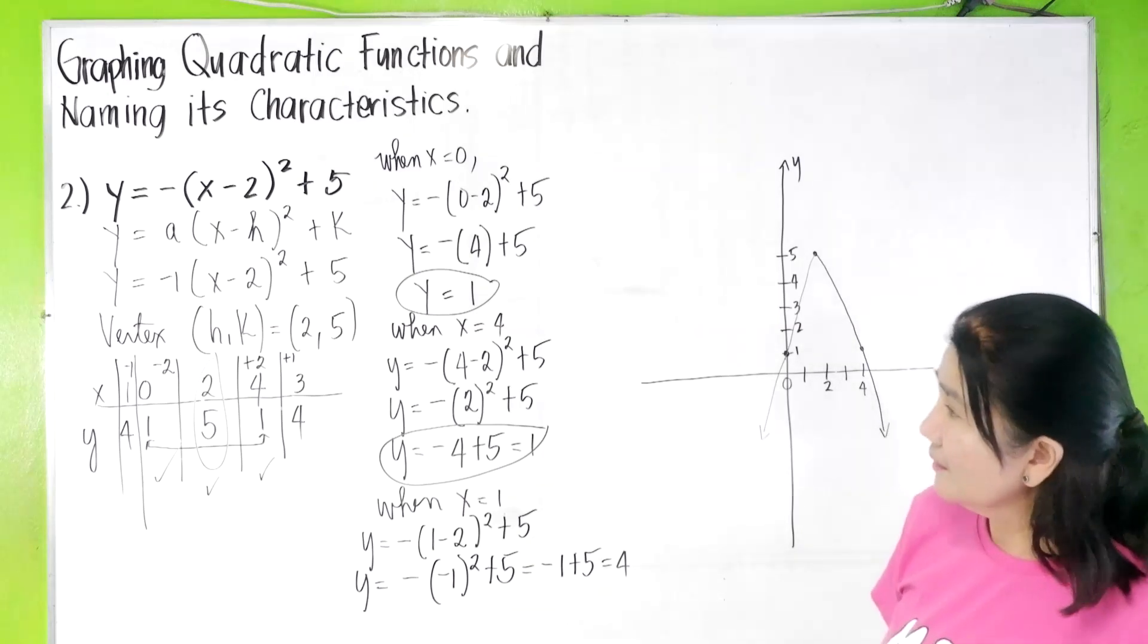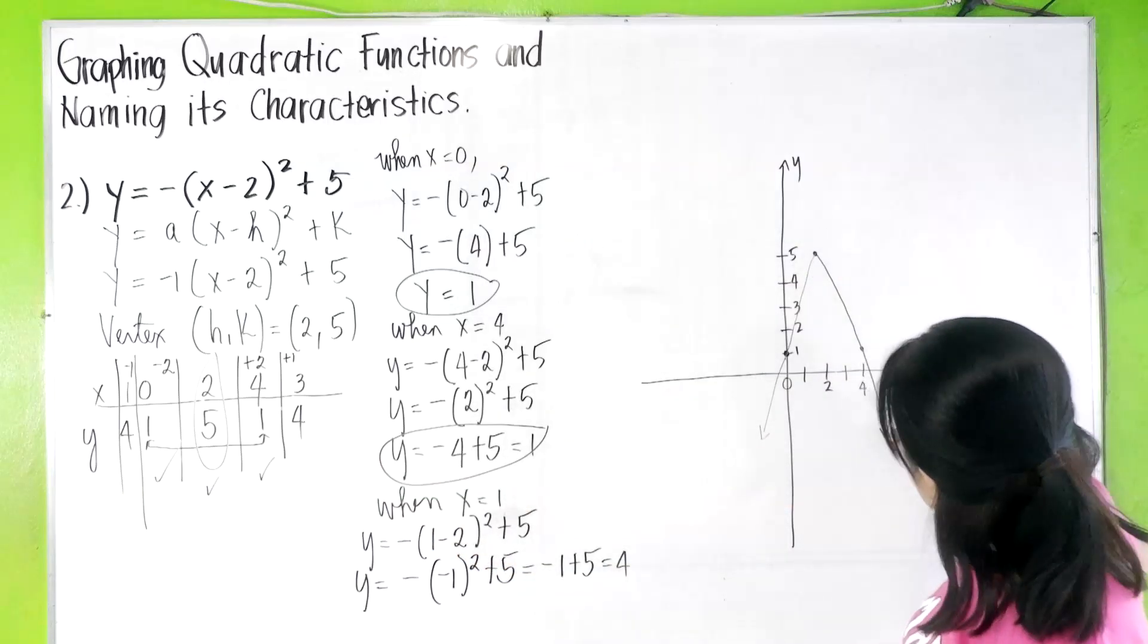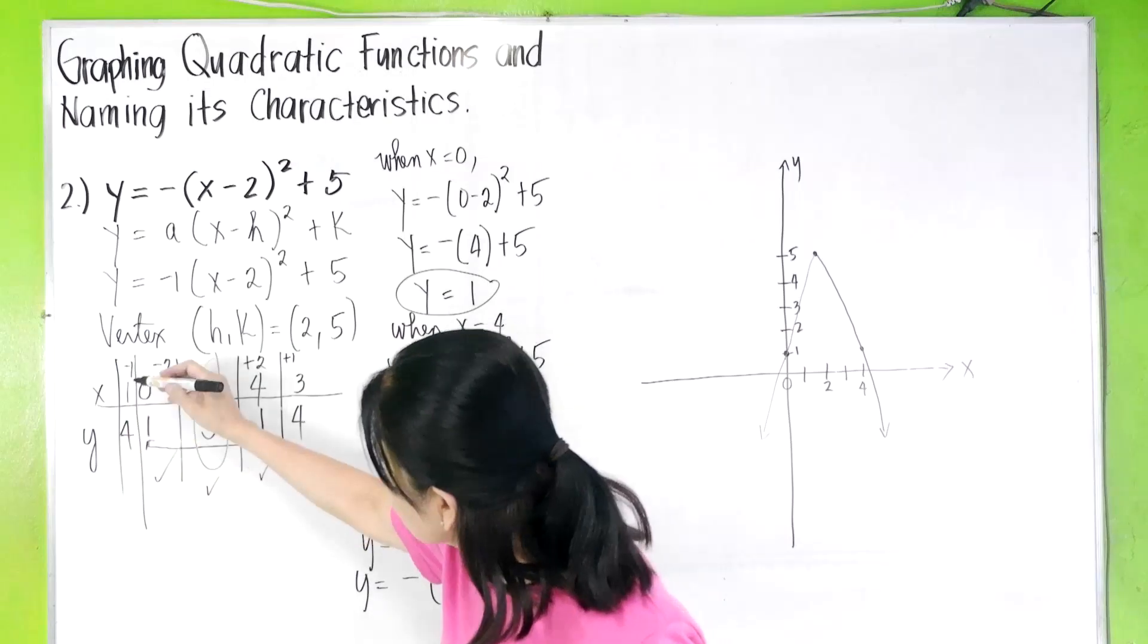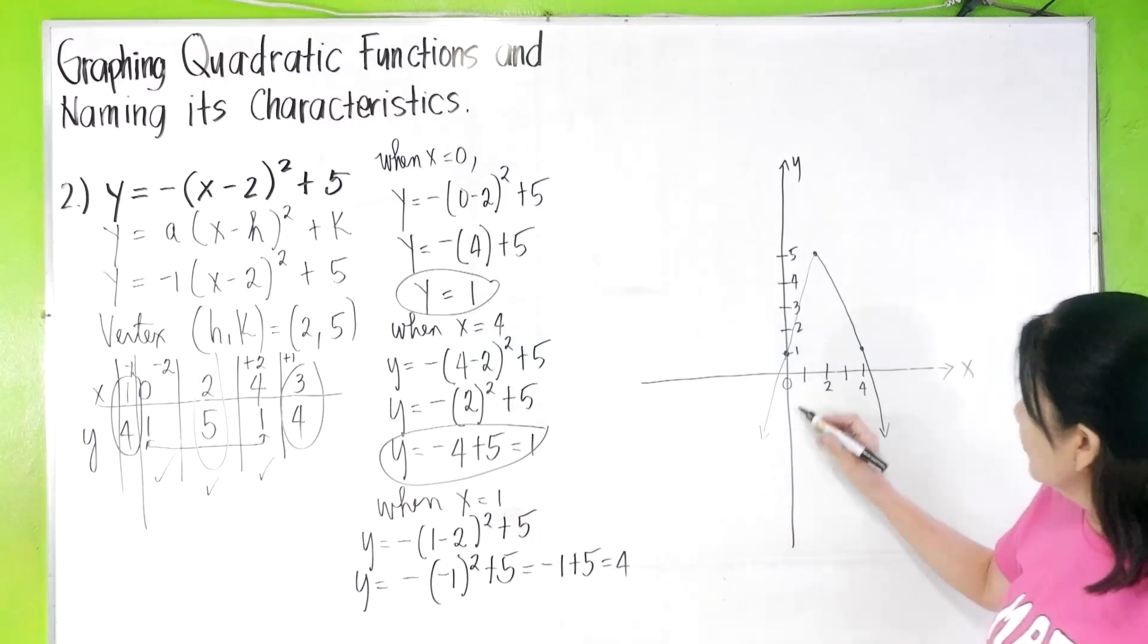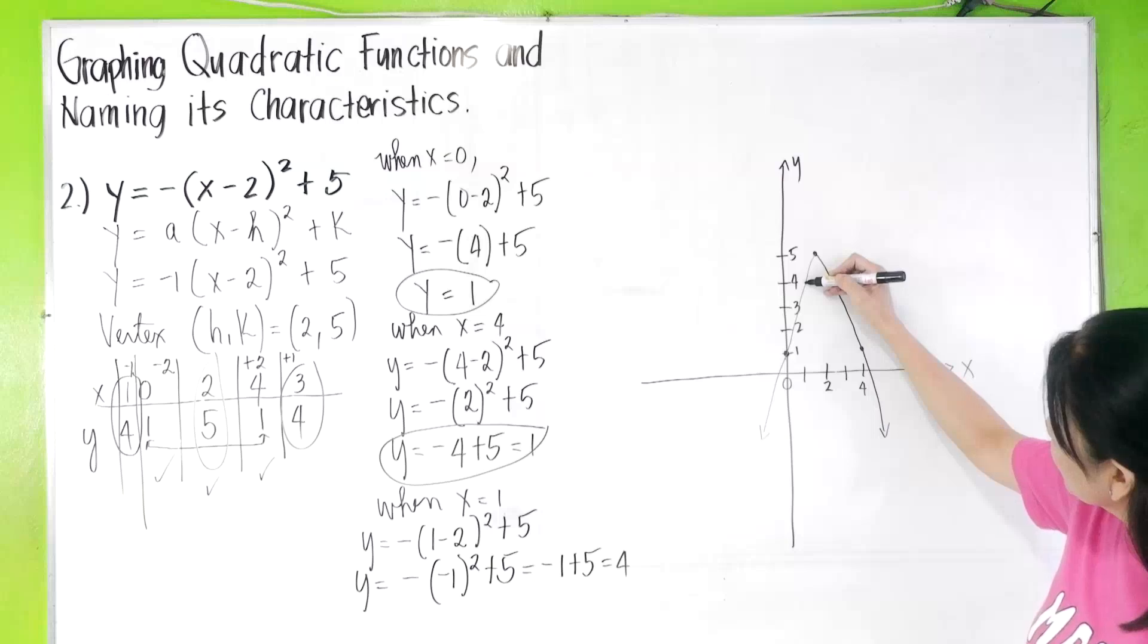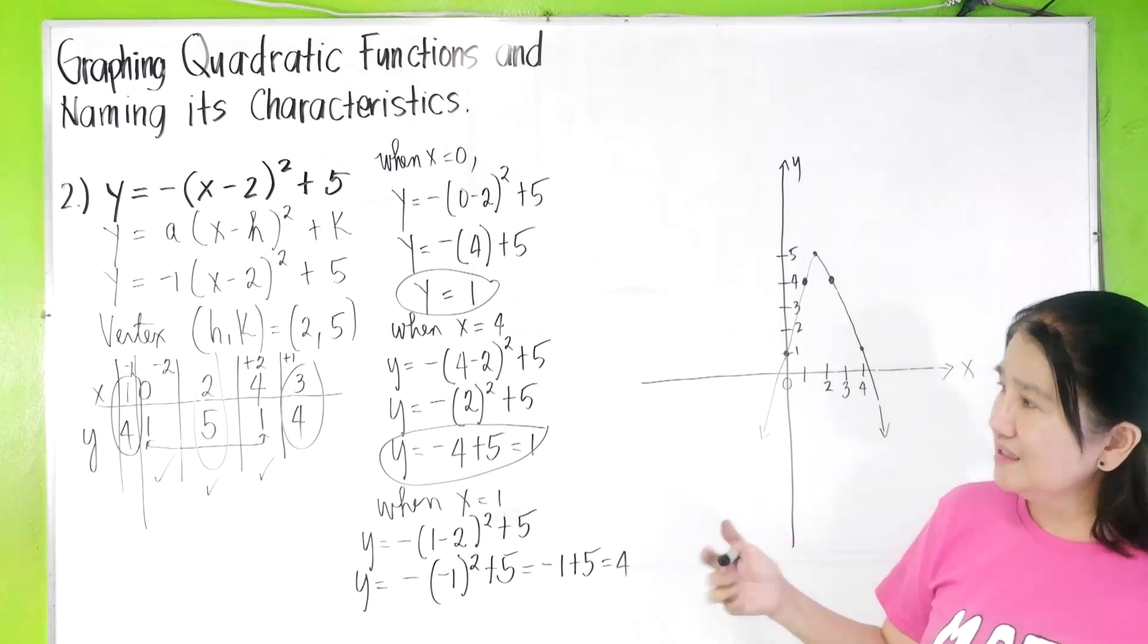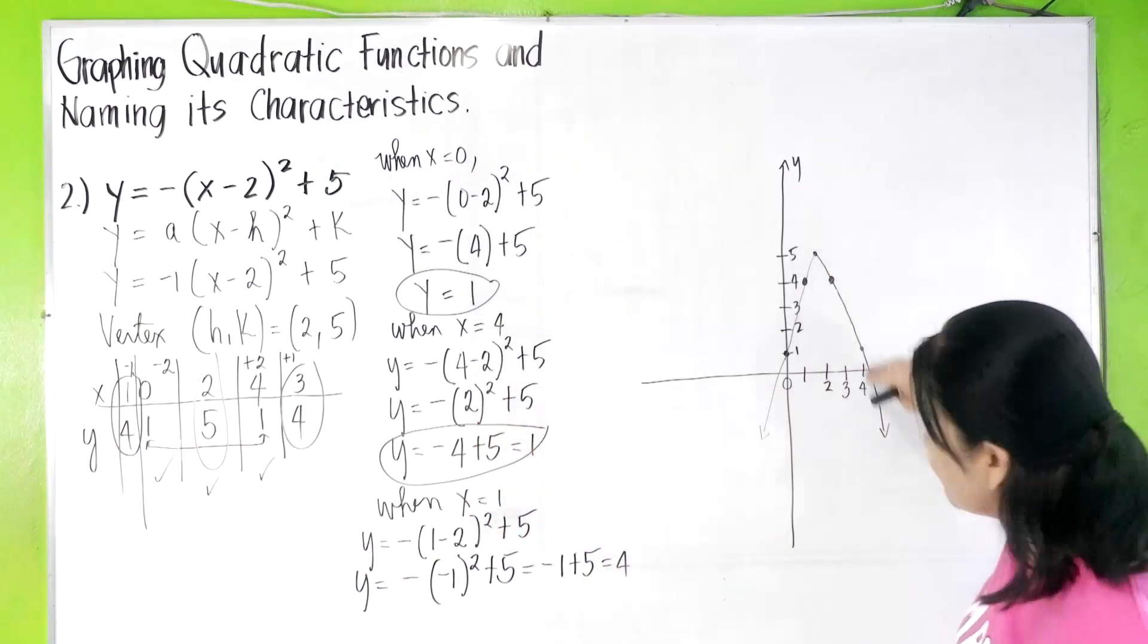As you can see, you have a parabola opening downward. But where are the values one, four, one, four, and three, four? Where is one? Four. One, four is here. See? And then three, four is also somewhere here. There. So as you can see, the zero, the one, four, and the three, four are also on the same parabola.